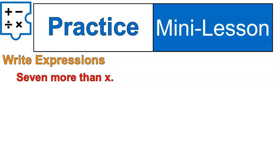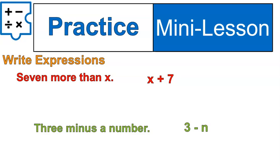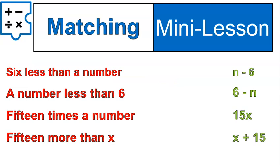Let's try this. Seven more than x. Seven more than x. How would we write that as a math sentence, or in other words, an expression? Or more accurately, a variable expression? Well, it would be x plus seven. Seven more than x means you start with x and then you add seven. How about this? Three minus a number. That one's pretty straightforward. We start with three and then we subtract a number, n. And that's how we do this.